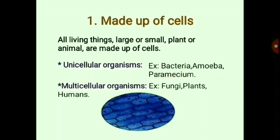Let's look at the characteristics of living things. Our first characteristic is being made up of cells. All living things, whether large or small, plant or animal, are made of cells. Animals made of a single cell are called unicellular organisms — for example, bacteria, amoeba, paramecium, etc. Organisms made up of a large number of cells joined together are called multicellular organisms — for example, fungi, plants, humans, etc. As seen in this picture, it is a microscopic picture of a plant in which large numbers of cells are joined together.